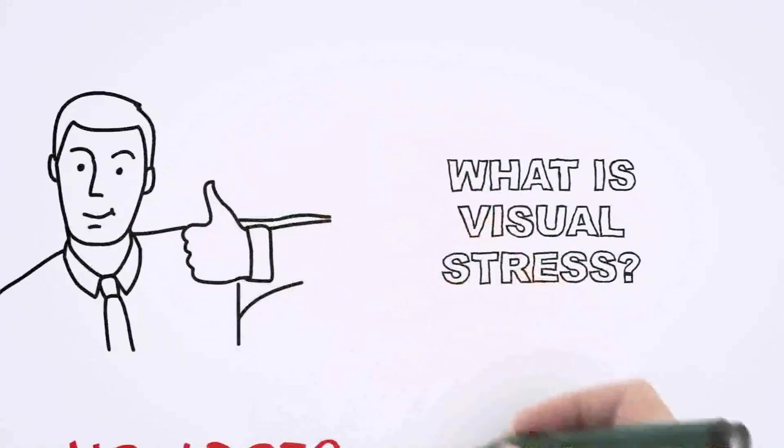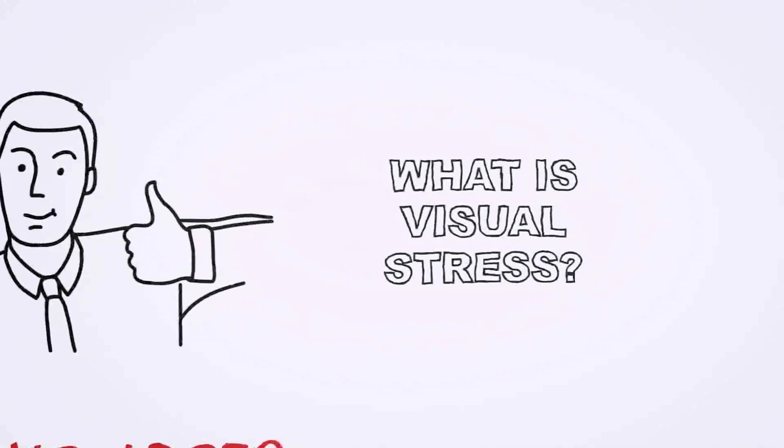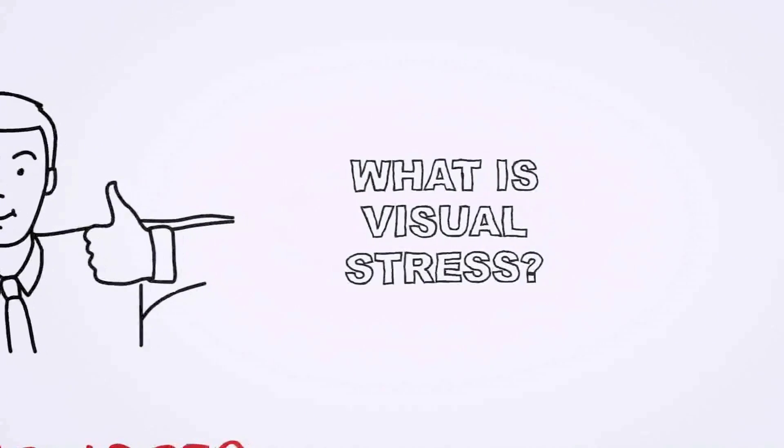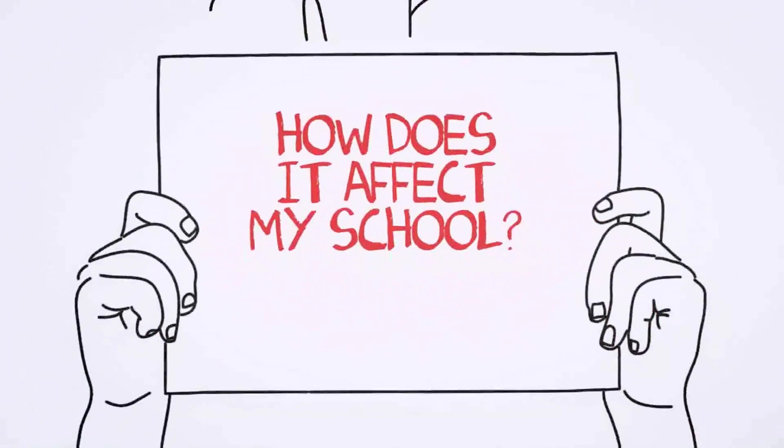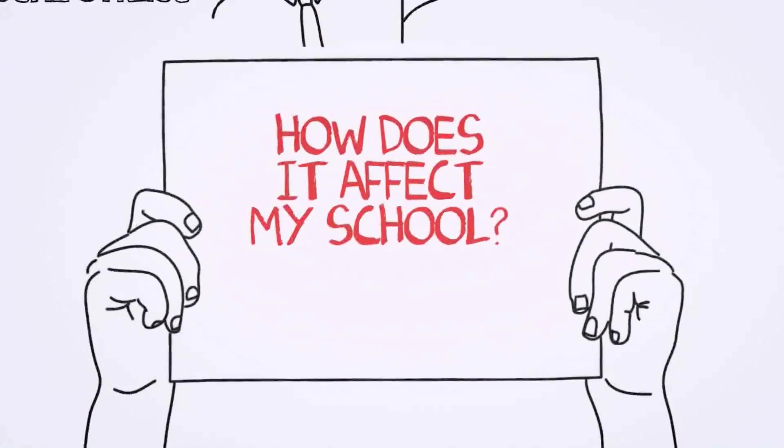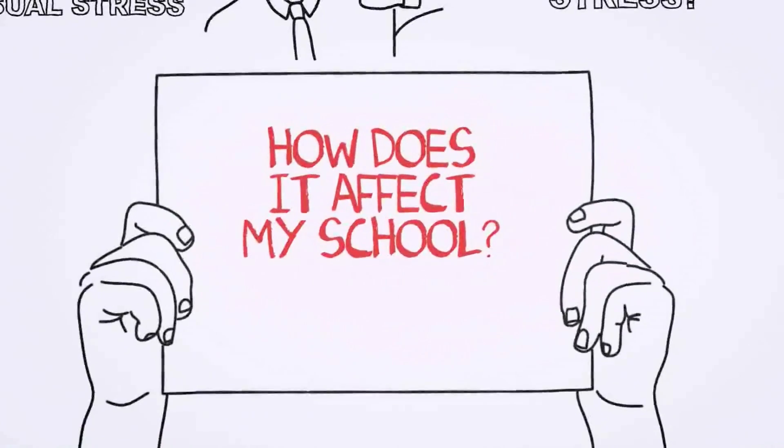Visual stress makes words move around on the page, making reading difficult. 30 percent of pupils in your school are likely to have this problem and remain undiagnosed. This is too big to ignore.